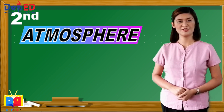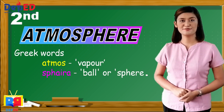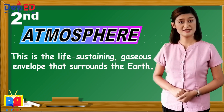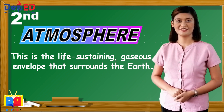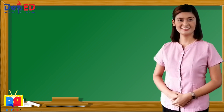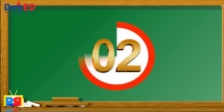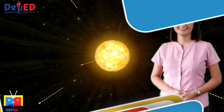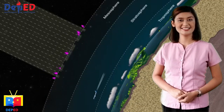The second subsystem of the Earth is the atmosphere. It is derived from the Greek words 'atmos,' which means vapor, and 'sphaira,' which means bulb or sphere. This is the life-sustaining gaseous envelope that surrounds the Earth. It reaches beyond 100 kilometers above Earth, yet 90% occurs within just 16 kilometers of Earth's surface. This thin blanket of air is an important part of the Earth — it provides the air that we breathe, and it also protects us from the sun's intense heat and radiation.